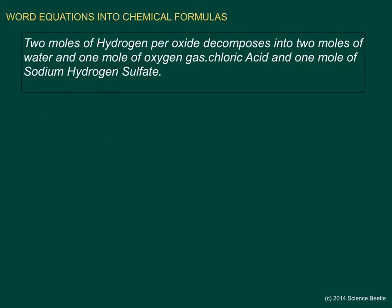Here's the second problem for today — let's translate this one. We'll begin on the left-hand side. We've got two moles, represented with a coefficient of two. Let's identify all the moles and convert them to numbers first: two moles here gives a two, two moles here gives another two, and one mole gives a one. The keyword 'hydrogen' has the symbol H, and 'decomposes' is represented by an arrow sign.